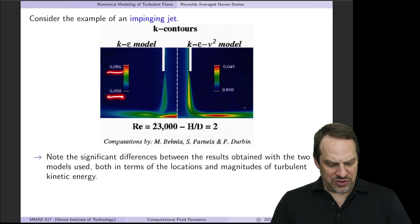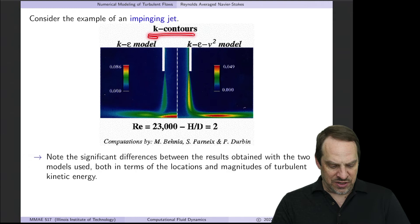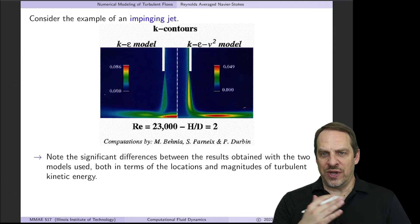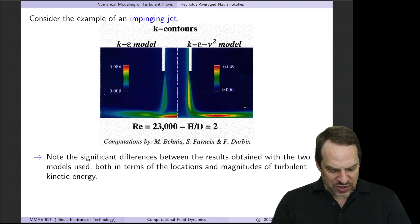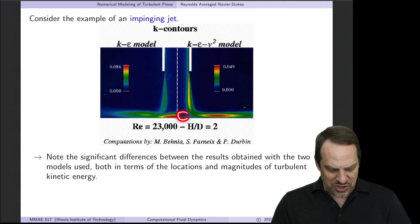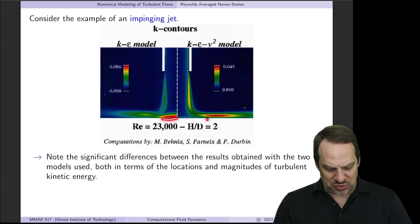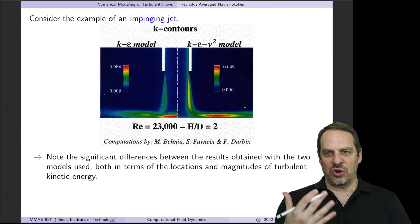First, just look at the color map. It goes from 0 to 0.086 for k-epsilon, and 0 to 0.049 for k-epsilon nu squared. There's roughly a factor of two difference in the maximum magnitude. We're plotting the k contours, the turbulent kinetic energy. Quantitatively, the results are quite different by up to a factor of two. Not only that, but notice where each model predicts the largest values of k are. In k-epsilon, it's right near the center where the jet impinges on that lower surface. In k-epsilon nu squared, that region is predicted to be rather boring, close to zero, and the maximum occurs out here, far from the centerline and displaced from the surface.